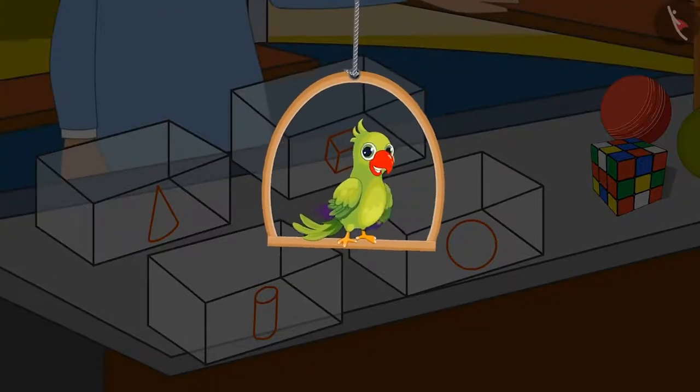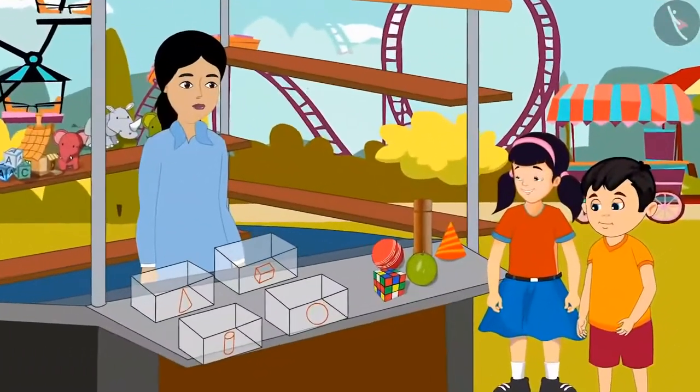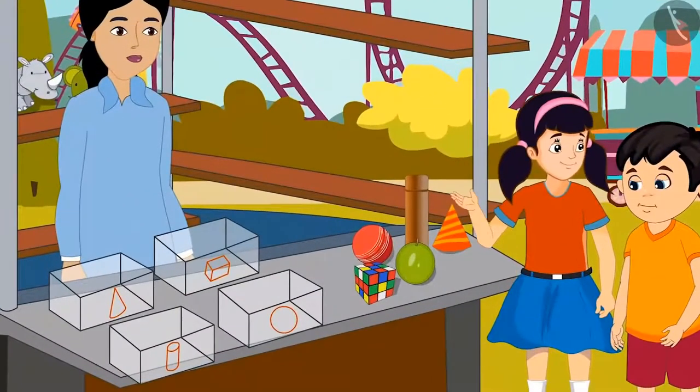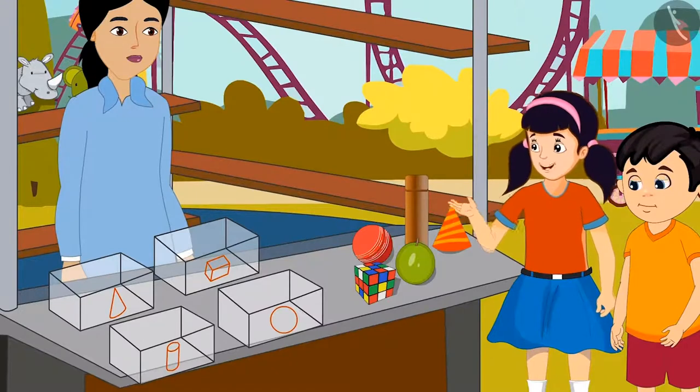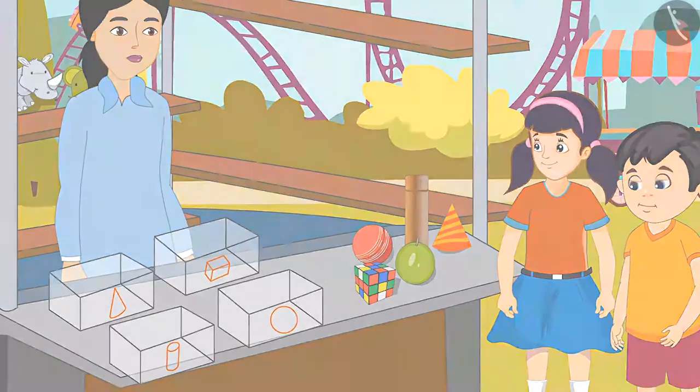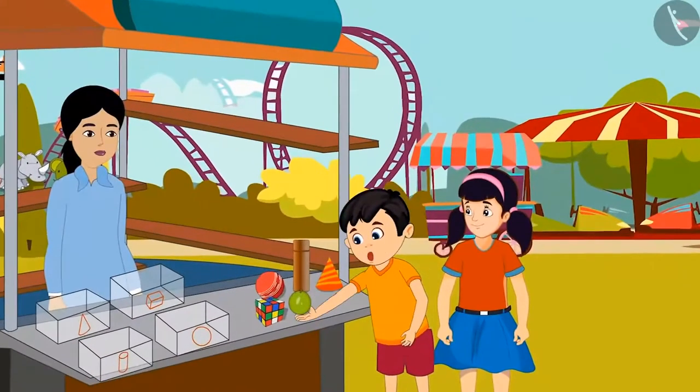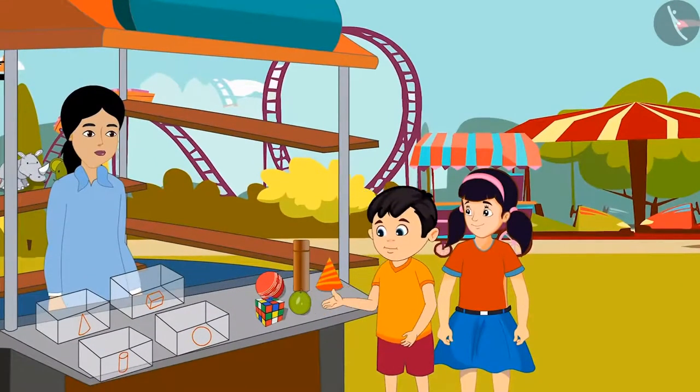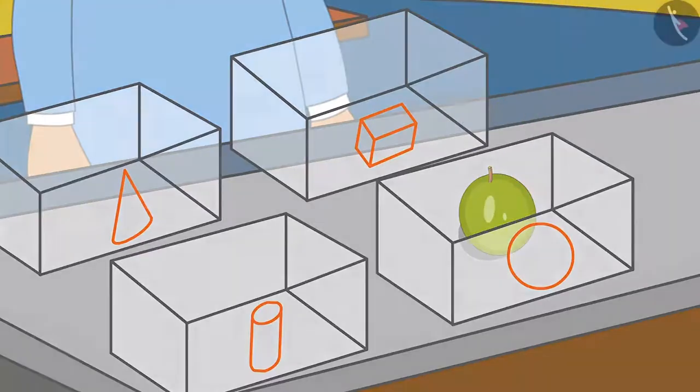Chotu and Neha started playing. Chotu, first of all, let's find objects that look like the shape of a round ball. Yes Neha, I found an object which looks like a round ball. I will put it in this box.